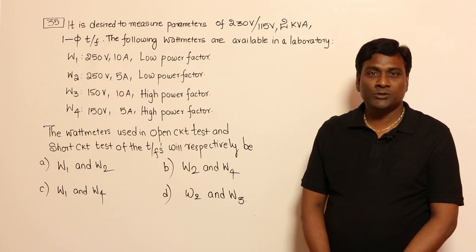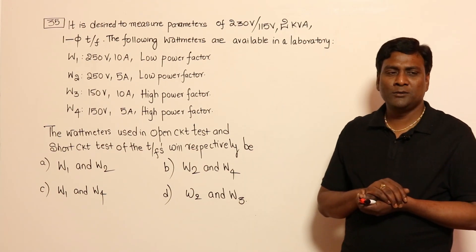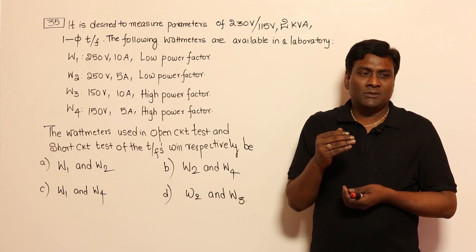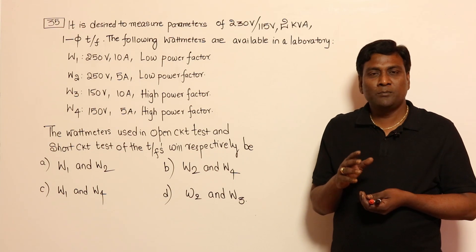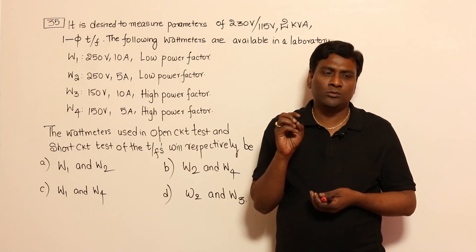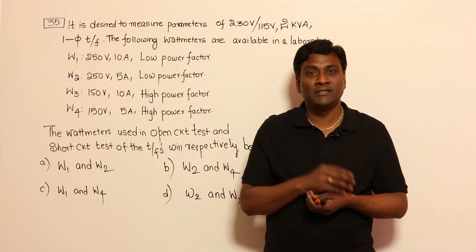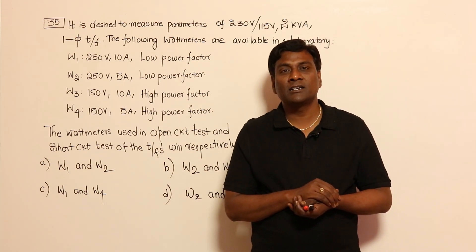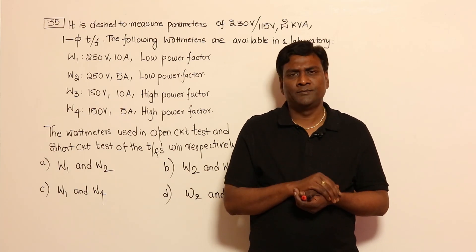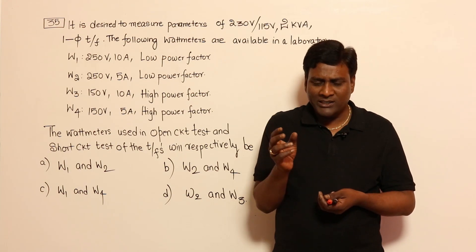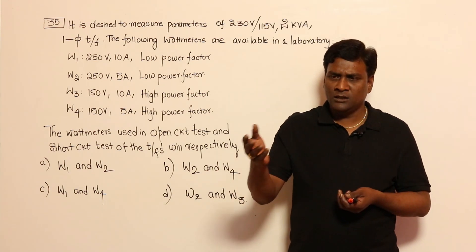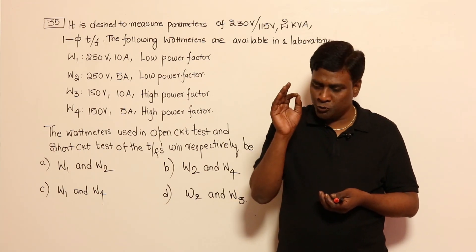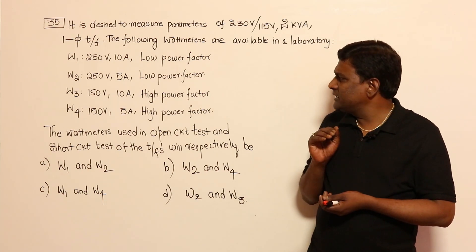Let me take a 2008 question — it's quite interesting because even IITs can make mistakes. In books, theory and practice problems are separate. From a problems point of view, no book has made mistakes, but from a theory-writing point of view, yes. In our previous problem, the SC test power factor was 0.25. Any SC test power factor will be 0.2, 0.1, 0.15, or 0.25 — always low power factor only.